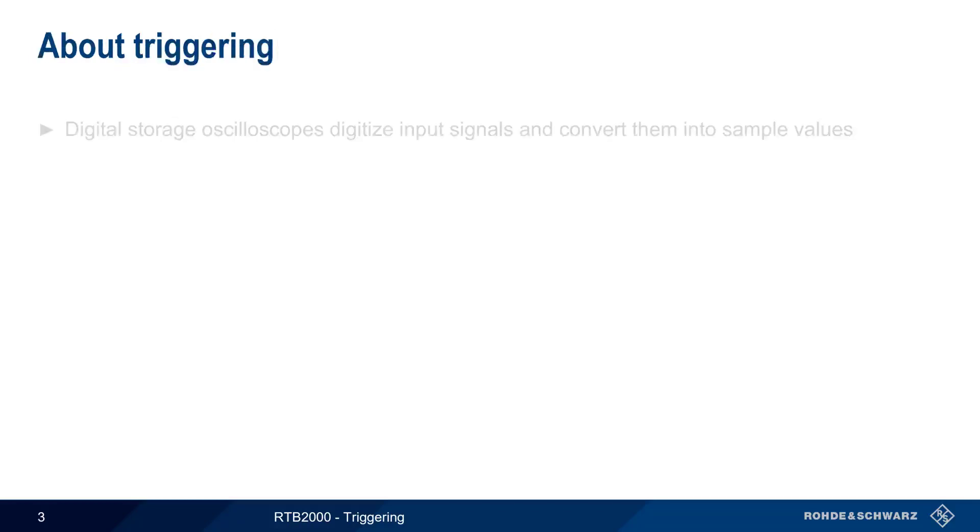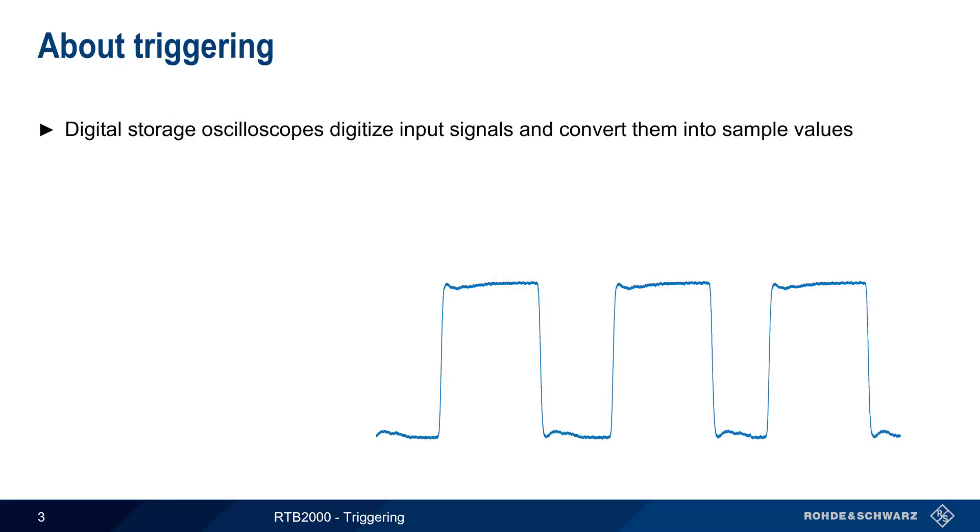As you should already know, modern digital storage oscilloscopes digitize input signals and convert them into sample values that are then processed and displayed on the screen. This process is normally started when a so-called trigger event occurs, and we'll spend most of the rest of this presentation explaining the different types of triggers on the RTB and how to configure them.